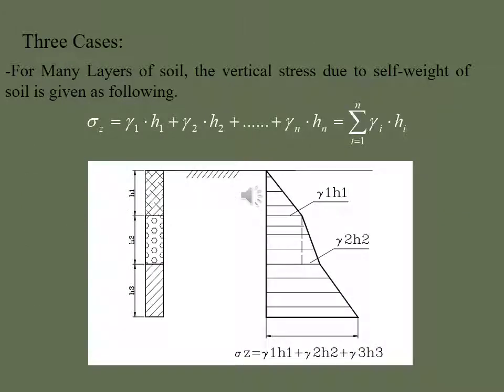The case is for many layers of soil, the vertical stress due to self-weight of soil is given the following. Sigma z is equal to gamma into h1 first layer, gamma 2 into h2 and gamma l into hl integral.